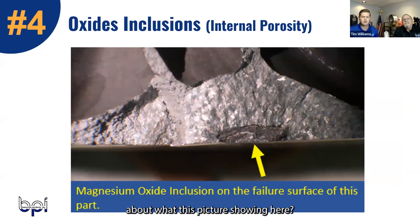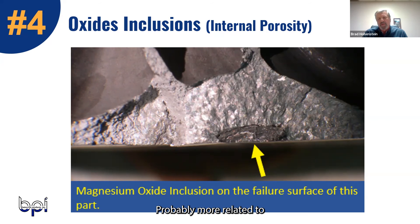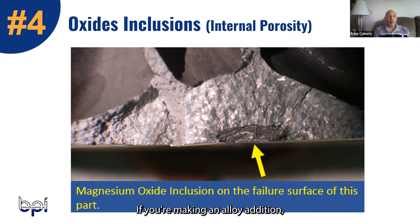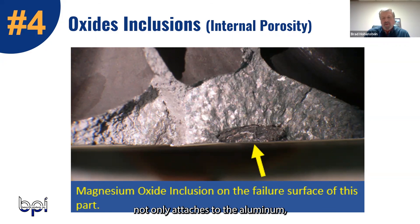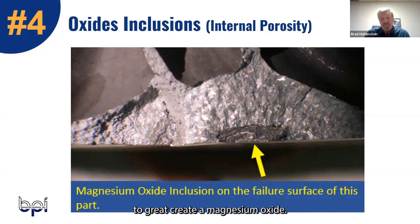Ernie, can you talk a little bit about what this picture is showing here? Ernie: This is just a magnesium oxide inclusion that formed at the chill face. Probably more related to when you're adding more magnesium to your melt and not distributing that evenly, so you have an area that's enriched in magnesium. If you're making an alloy addition, you have to make sure that you get it plunged and thoroughly distributed through the melt. So the oxygen not only attaches to the aluminum to form aluminum oxides, it will combine with the magnesium to create a magnesium oxide.